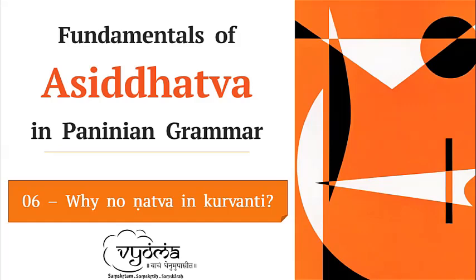We are going to see one more example, because it is only as we keep analyzing each example that we understand how purvatrasidham operates. Today we will see an example where there are multiple sutras of the tripadi involved, and how asiddhatva helps in ensuring that the sadhu rupa is derived.